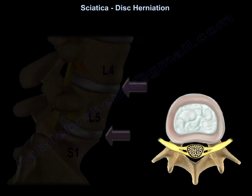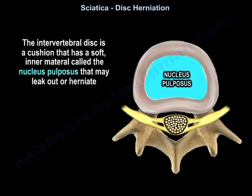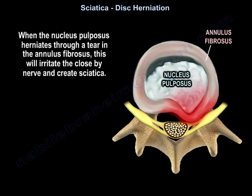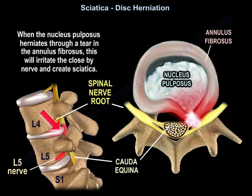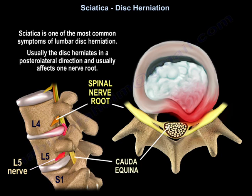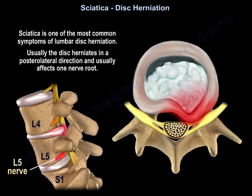With lumbar disc herniation, the intervertebral disc is a cushion with a soft inner material called the nucleus pulposus, which may leak out or herniate. This soft inner material is surrounded by an outer strong fibrous layer called the annulus fibrosus. When the nucleus pulposus herniates through a tear in the annulus fibrosus, it irritates the nearby nerve and creates sciatica. The disc usually herniates in a posterolateral direction, typically affecting one nerve root.